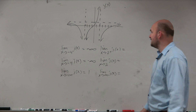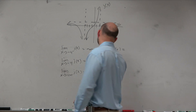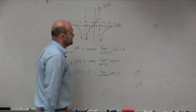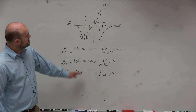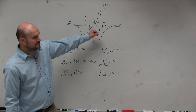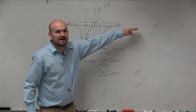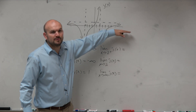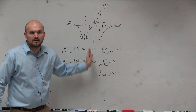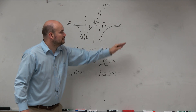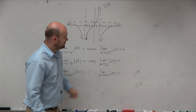Over here, the limit as x approaches 2 from the right of j of x — here's 2. As we're coming from the right, it looks like we are approaching negative infinity.